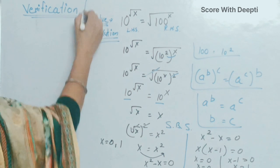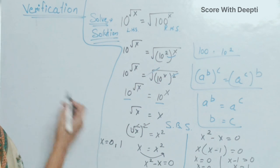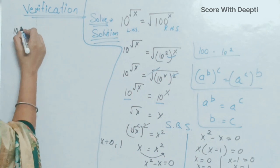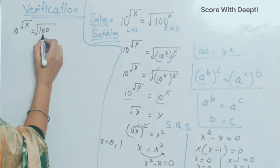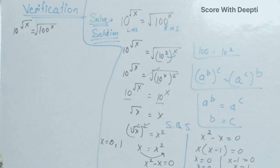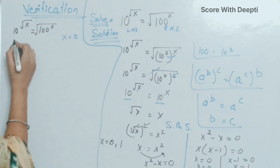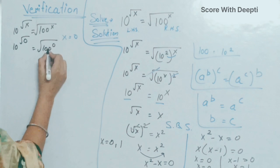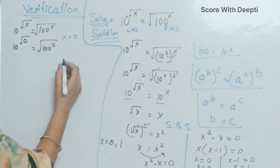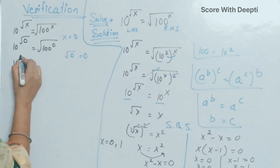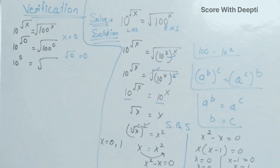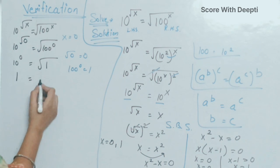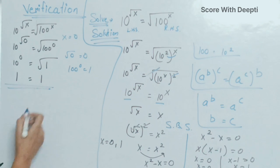Our next step is to verify that our answer is correct. First, we take x equal to 0. We write the statement: 10 raised to power square root x equal to square root of 100 raised to power x. Putting x equal to 0, we get 10 raised to power square root 0 equal to square root of 100 raised to power 0. Square root of 0 is 0, so we get 10 raised to power 0 equal to 100 raised to power 0, which is 1 equal to 1. Left hand side equals right hand side, so our answer is correct.